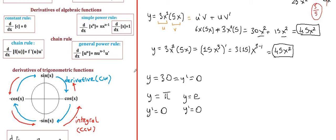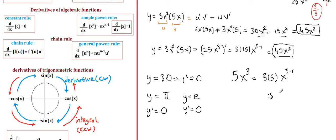Let's practice the power rule. For simple power rule, if we have y equals 5x cubed, we bring the power to the front and subtract 1. So it's 3 times 5, x to the 3 minus 1, giving 15x squared.